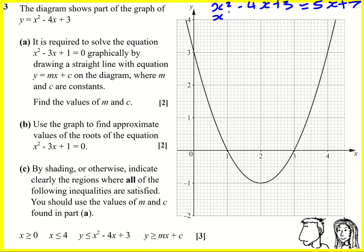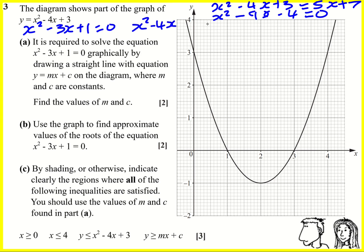We could actually rearrange this equation — I could minus 5x and I could minus 7, and in fact it would also solve this equation here. So basically that's what we're trying to do in this question. We are trying to start with the equation we want to solve and somehow get x squared minus 4x plus 3 on the left hand side. So if we minus x from both sides that will help, so it will equal minus x on the right hand side instead of 0, and I just want to add 2 on.